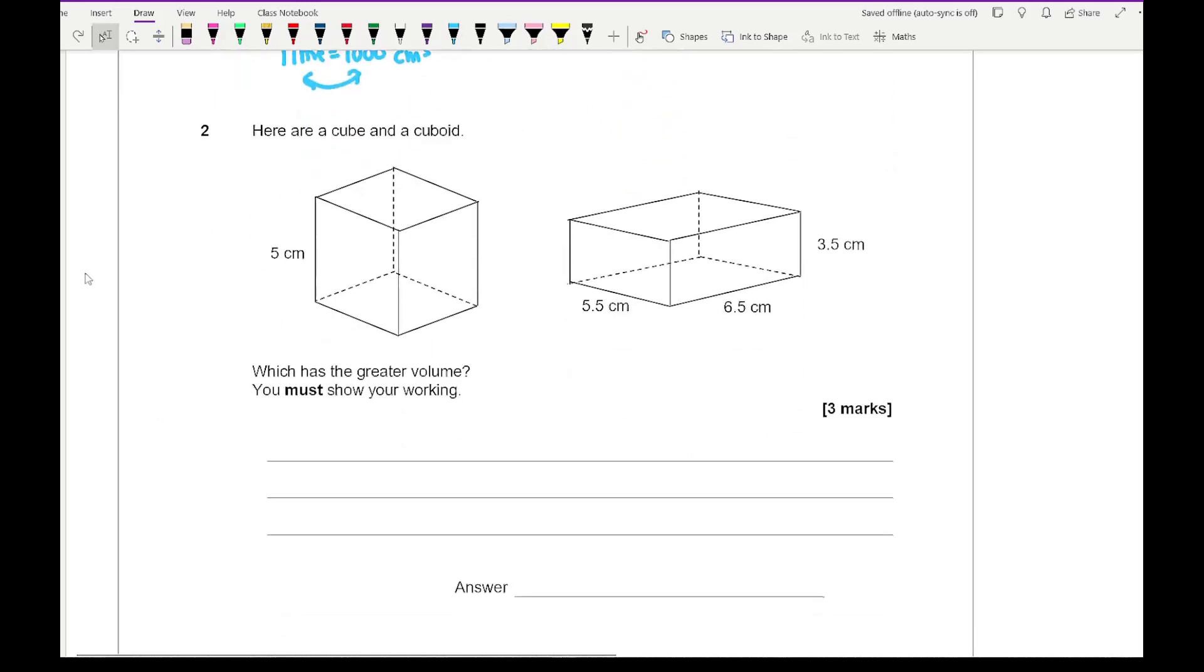Looking at question two, it says, here is a cube and a cuboid, which has a greater volume? So, if we start, it says show our full working out. For the cube, we've got 5 times 5 times 5, which is 5 cubed, which is 125 centimetre cubed. Also, it's worth making sure that the units of each of the lengths on both shapes are the same.